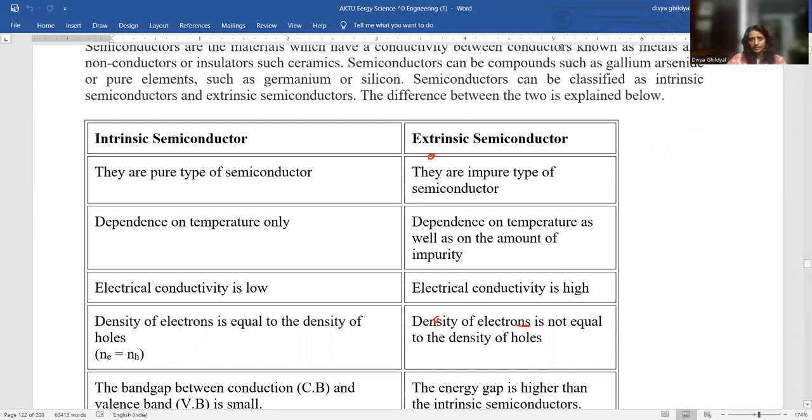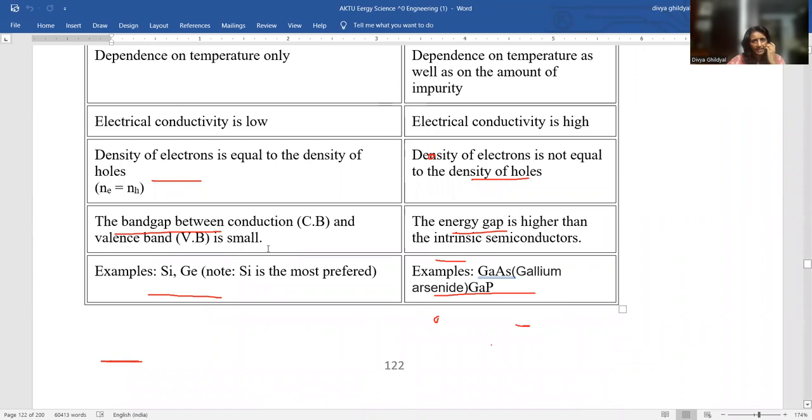Intrinsic, extrinsic semiconductor, 10 mark question. Intrinsic semiconductors are the pure types. Extrinsic ones are the impure type. Intrinsic depend on temperature only. Extrinsic depend on temperature as well as the amount of impurity added. Electrical conductivity in this case is low. So if I need to design a very small apparatus, I will use an intrinsic semiconductor. If I need to design a very big apparatus for larger power supply, I will go for the extrinsic semiconductor where my electrical conductivity is high. Density of electrons is equal to the density of holes here because it is pure. So the number of electrons and number of holes will remain same. Here p-type, n-type, it is going to vary. Band gap between conduction band and valence band is small. Band gap here is high. Example: silicon, germanium. Semiconductor examples. Here they are as compounds: Gallium arsenide, Gallium phosphorus, etc.